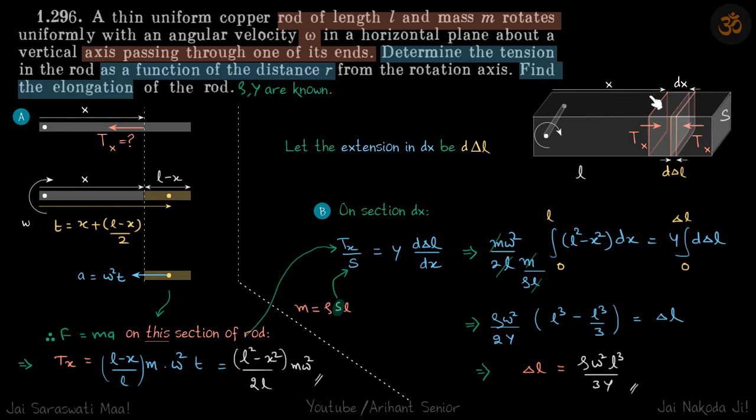Just like in the previous problem, we are going to take an element at a distance X whose width is DX. Within that element DX, let's say the change in length is D delta L. In this diagram I have drawn the arrows in the wrong direction, let me correct that. Tension will be pulling the rod apart.